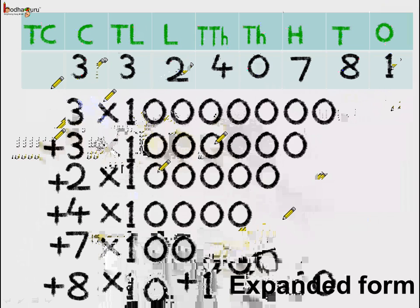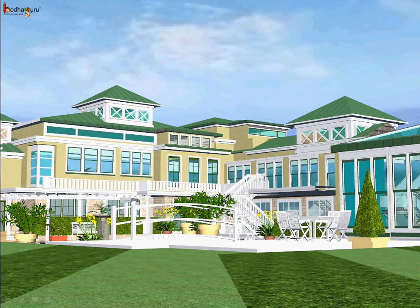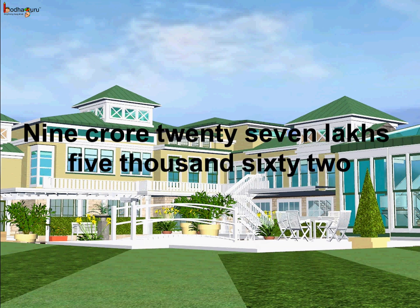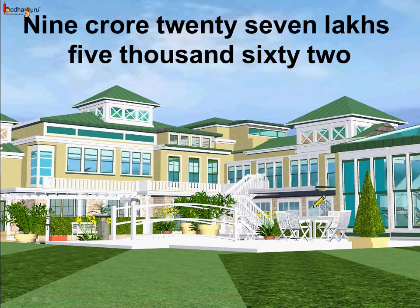Now, it might seem very complicated — how do we ensure that we wrote the correct number of zeros everywhere? Here is a picture of a beautiful hotel. How much money was required to build it? It was 9 crore, 27,05,062.